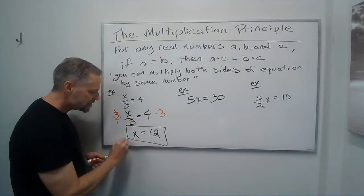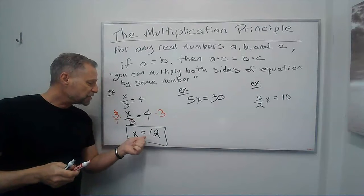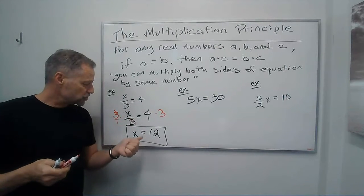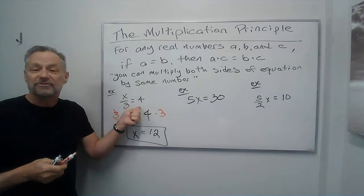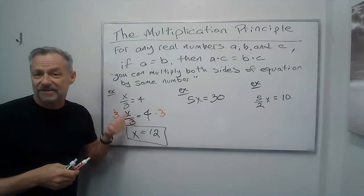Again, the nice thing about equations is we can plug this in to make sure it's a solution by plugging it in to make sure we get a true statement. 12 divided by 3 is 4, and we know 12 is the right answer because that checks.